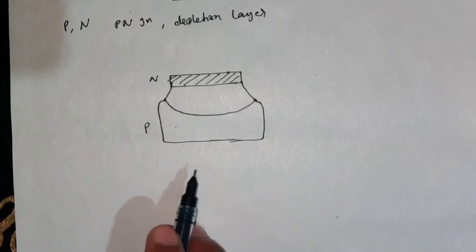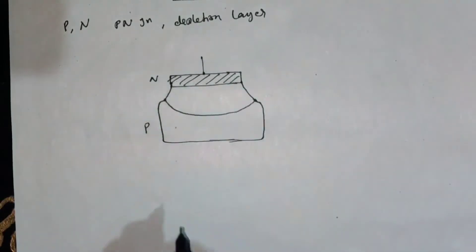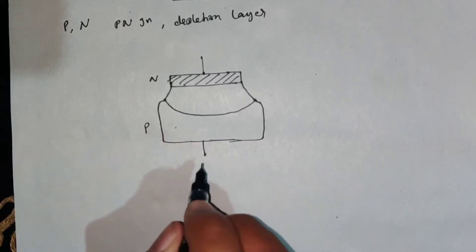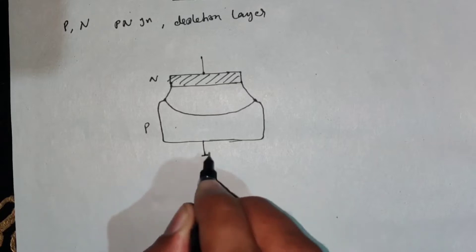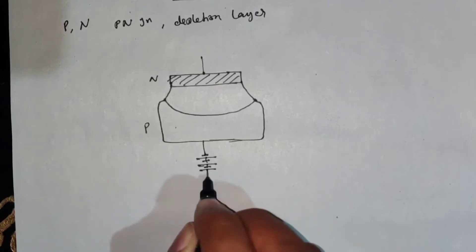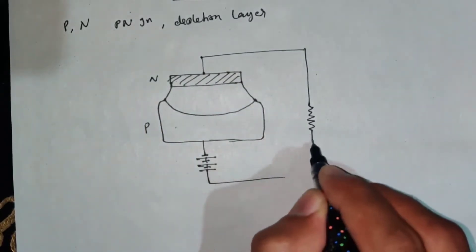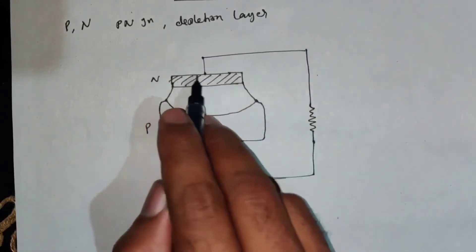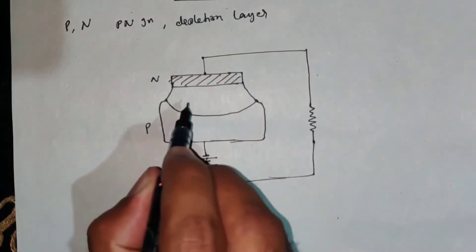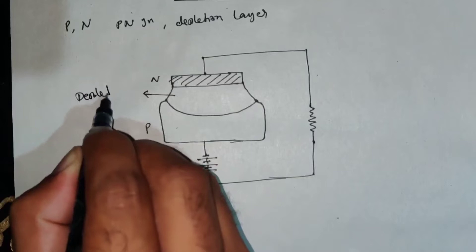In this particular detector, we have reverse bias. That is important. This PIN is a P-type with a negative layer on the left. This is an N-type with external resistance, load resistance, and a positive layer on the left. This is reverse bias - N region on one side, P region on the other, and a depletion layer between them.